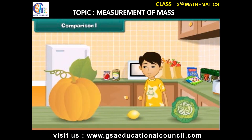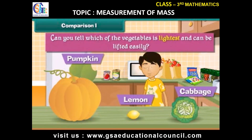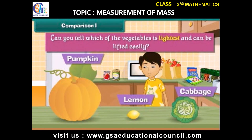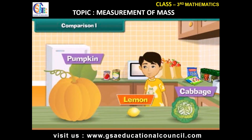Sandy has a pumpkin, a cabbage, and a lemon. Can you tell which of the vegetables is lightest and can be lifted easily? Yes, the lemon is lighter than the other two vegetables. He can easily lift a lemon.